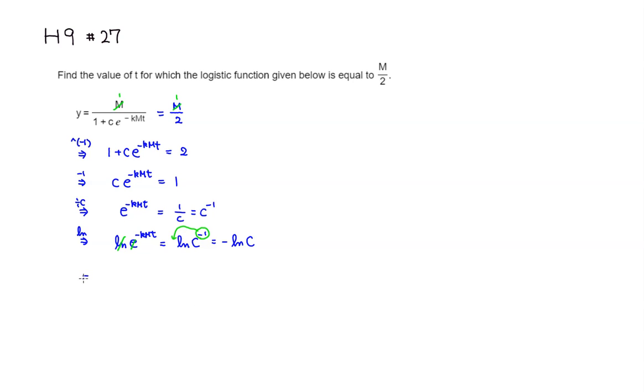So we can isolate t by simply dividing through by negative km. So what you get is going to be just t now. Negative sign cancels out. So you have natural log of c over km. So that's the value or expression for t.